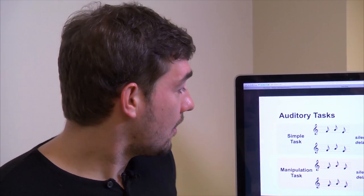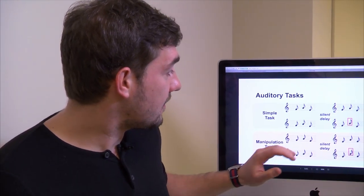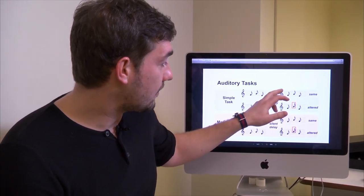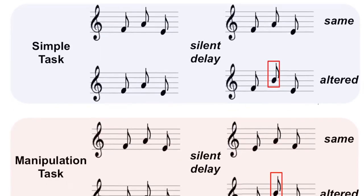I can show you here. One is a simple task where participants listen to two melodies, so a first melody, a silence, and a second melody. And they have to say, the melodies are the same or different.